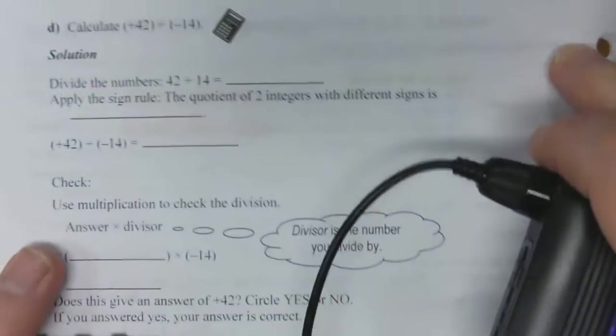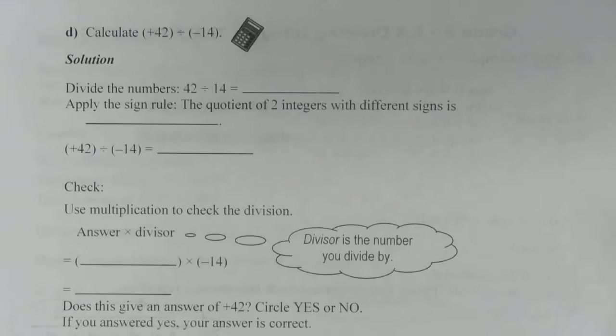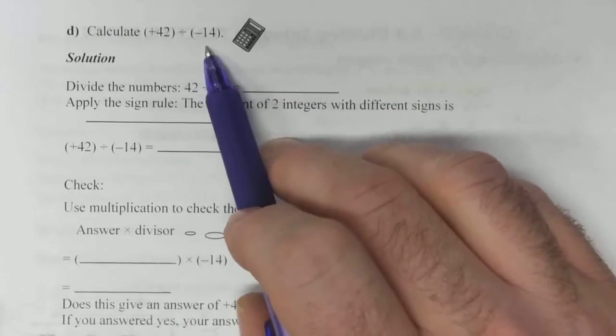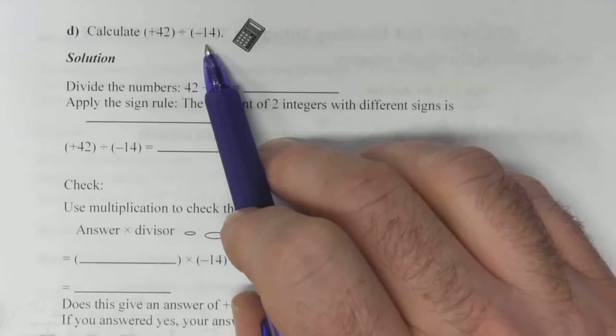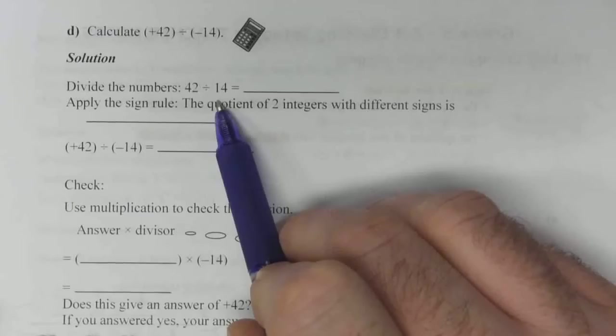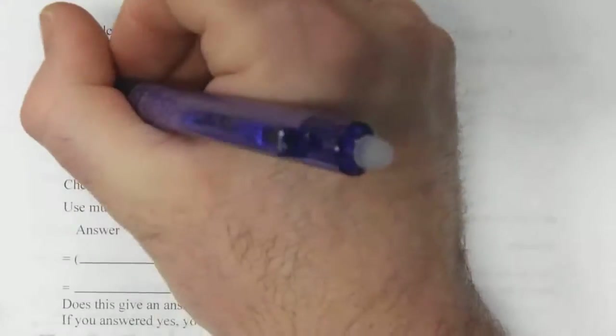One last example here. And this time we'll use our calculator, maybe. Positive 42 divided by negative 14. Divide the numbers first. 42 divided by 14 is 3. That's step 1.